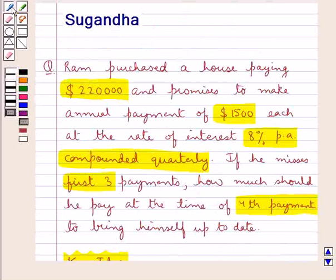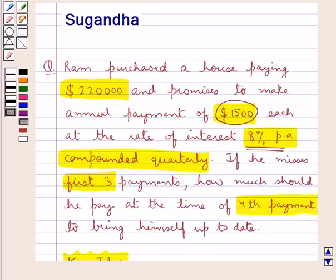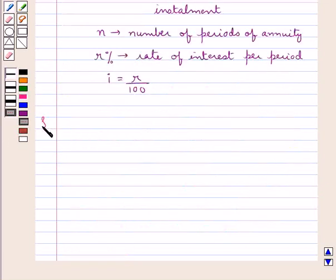In the question we are given that Ram purchased the house paying $220,000 and he makes annual payment of $1,500 each and the rate of interest is 8% per annum compounded quarterly. It is also given that Ram misses his first three payments, so we will have to find out the amount that he has to pay at the time of the fourth payment. Let's see the solution now.